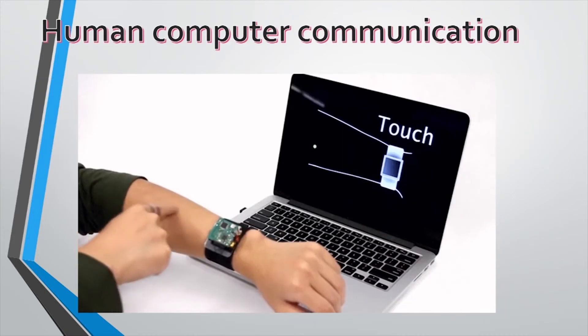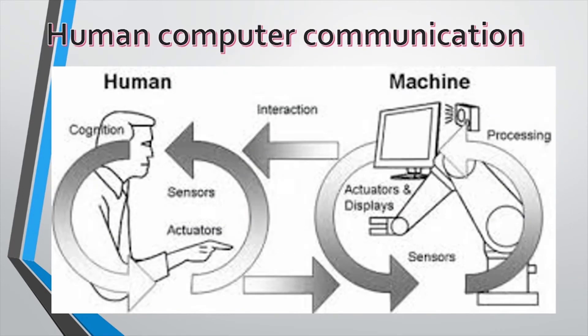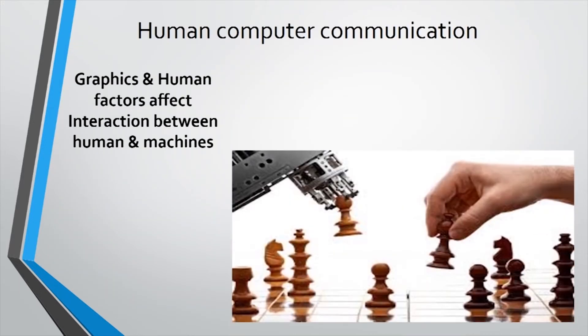Number 5. Human-computer communication. Efficient transfer of information between humans and machines is the central focus of this area. Graphics, human factors that affect efficient interaction, and organization and display of information for effective utilization by humans are included here.